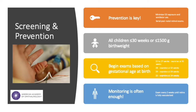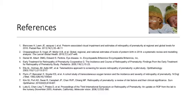Screening babies allows those who develop ROP to be treated earlier, reducing the risk of more invasive interventions or the effects of advanced disease. Screening guidelines are based on those large studies mentioned earlier, which recommend all babies born 30 weeks or younger and 1500 grams or lighter to be screened with serial exams until the retina is fully vascularized. This concludes our discussion. Thank you for listening.